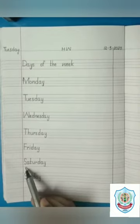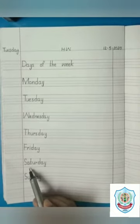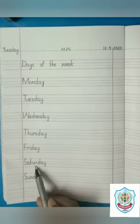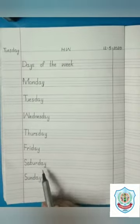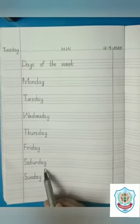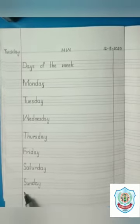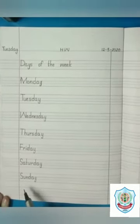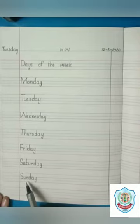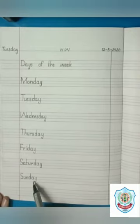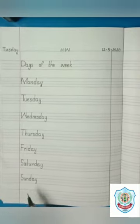Saturday: S has a sound S. A has a sound A. T has a sound T. U, R makes a sound R. D has a sound D. Y makes a sound A. Saturday. The last one is Sunday. S has a sound S. U has a sound A. N has a sound N. D has a sound D. Y makes a sound A. Sunday.